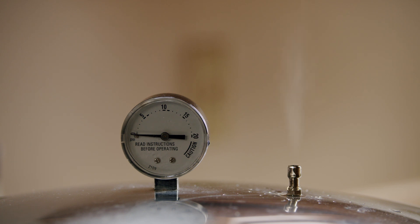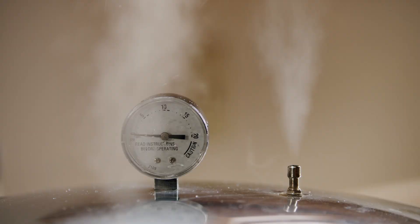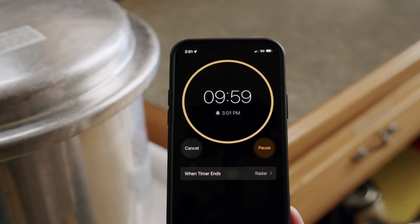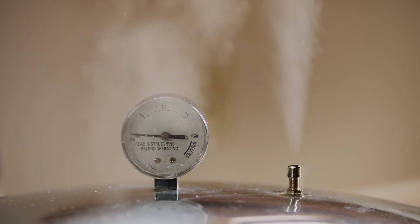Now it's time to vent the canner. Leaving the weight off the vent port, turn the stove burner to its highest setting and heat the canner until steam flows from the vent. Let the canner steam until a steady stream of steam starts to flow from the valve. Once you have a steady stream, set a timer for 10 minutes. You will need to vent the canner for a full 10 minutes before pressurizing.